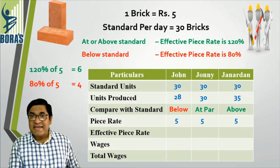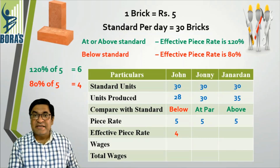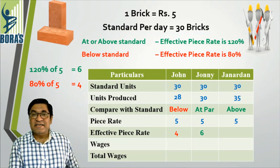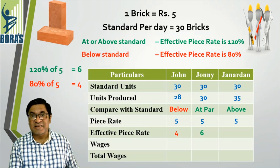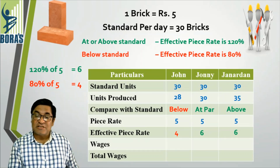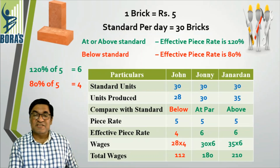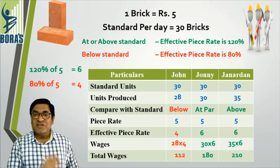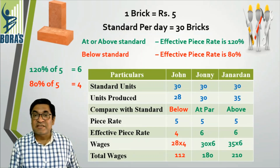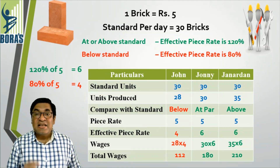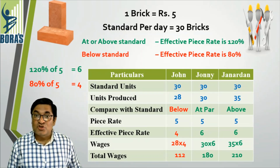John made less than the standard, so he gets 4 rupees per piece (80% of 5). Johnny met the standard exactly, so he gets 6 rupees per piece (120% of 5). Janardan exceeded the standard, so he also gets 6 rupees per piece. This means John received wages of 112 rupees, Johnny received 180 rupees, and Janardan received 210 rupees. The efficient worker, compared to the standard, received higher wages, while the inefficient worker received less. This system is known as the differential piece rate system, which Taylor gave to management.